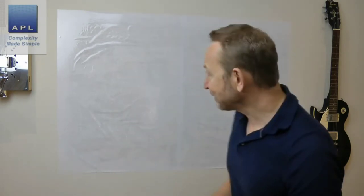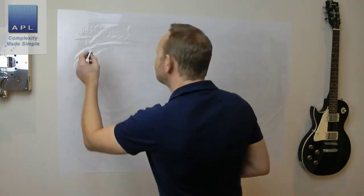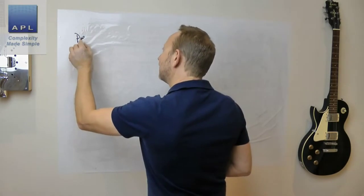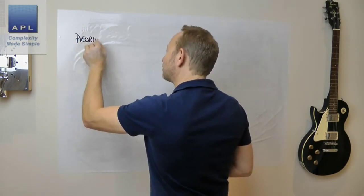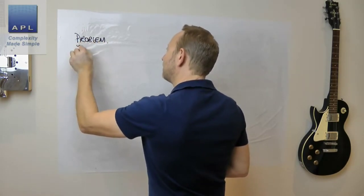We're going to take a look at the seven quality tools and how you can use them in the most powerful way to get your process capability exactly where you want it to be. Let's suggest we have a problem - we have a CPK that's not right.